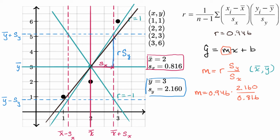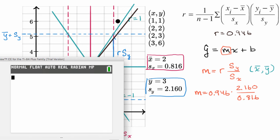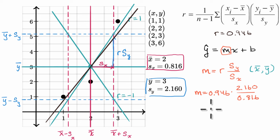We can get our calculator out to calculate that. So we have 0.946 times 2.160 divided by 0.816, it gets us to 2.50. Let's just round to the nearest hundredth for simplicity here. So this is approximately equal to 2.50.